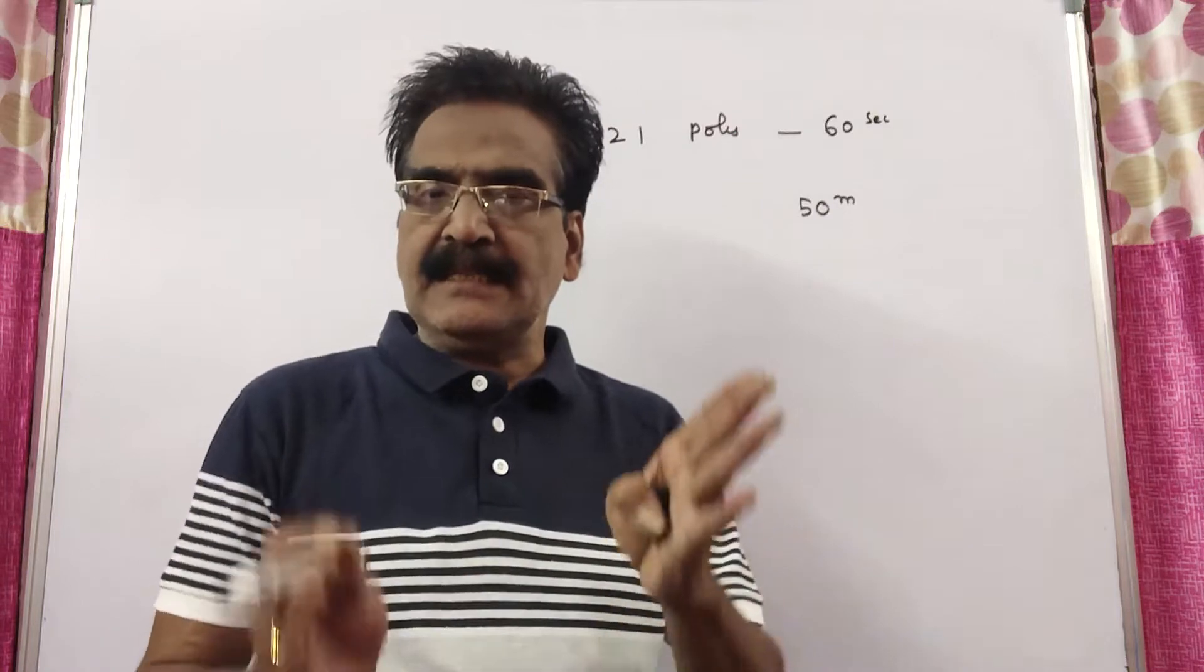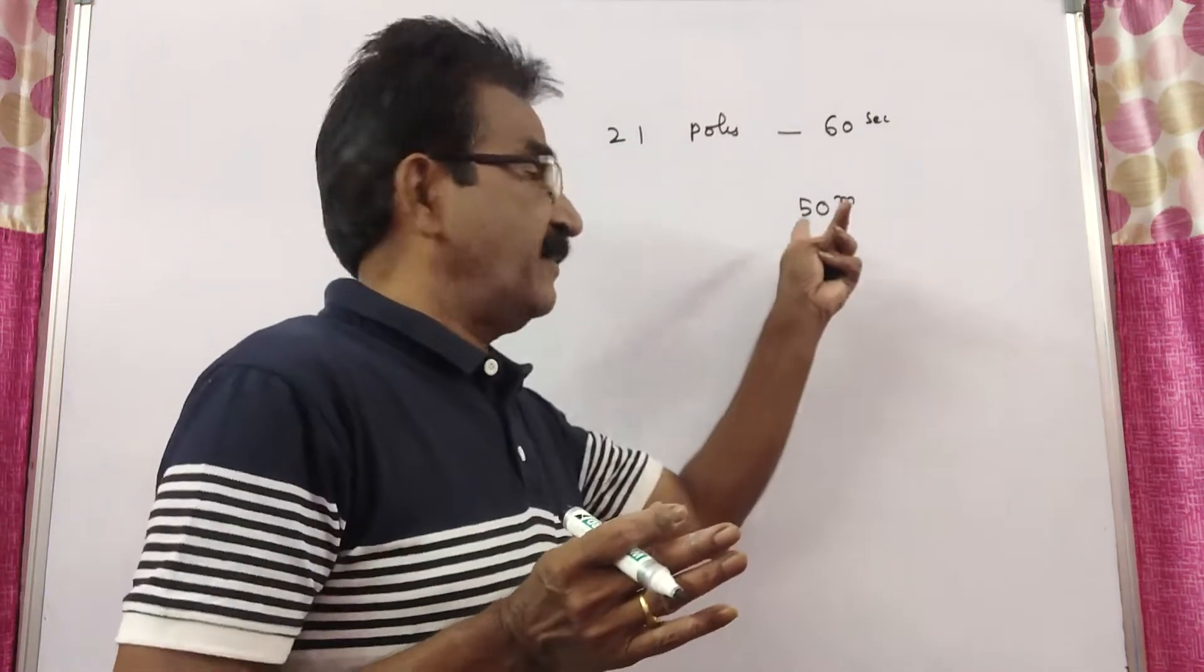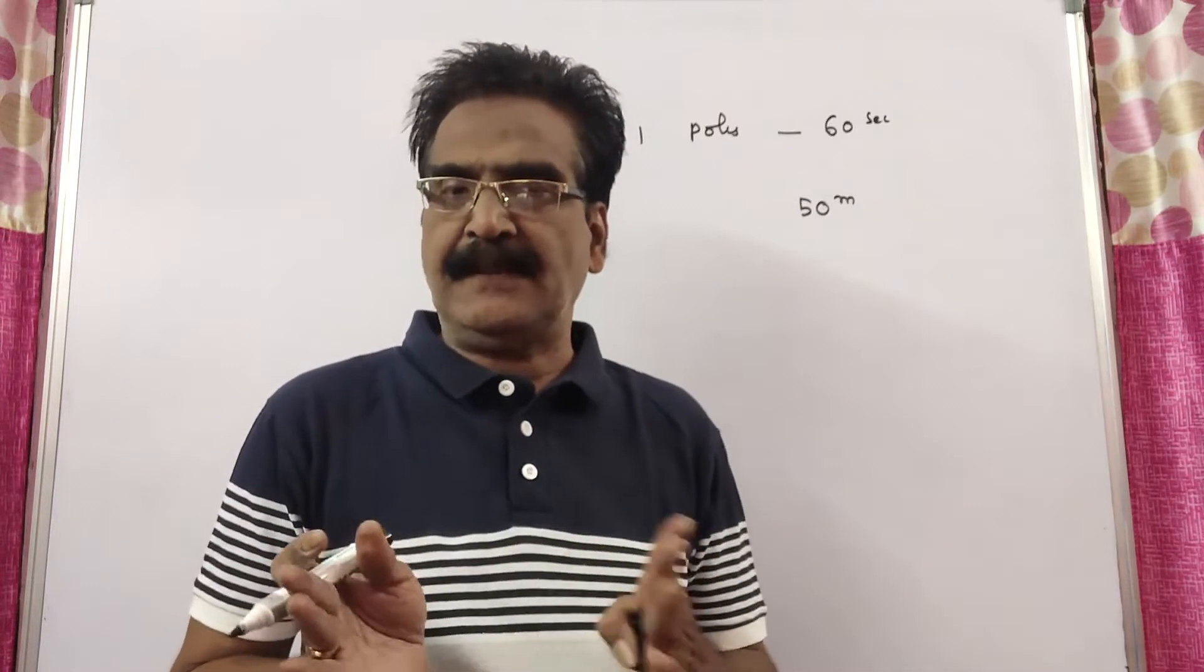And it is given that the distance between 2 successive poles is 50 meters. That means the poles are 50 meters apart.